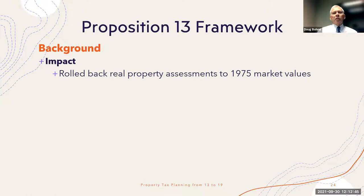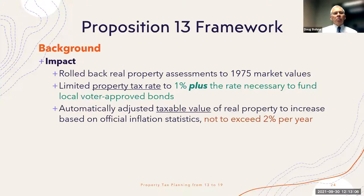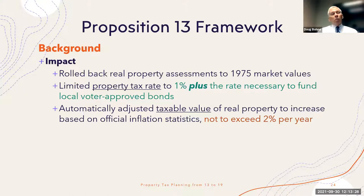Proposition 13 rolled back real property assessments to 1975 values and limited the property tax rate that assessors can charge to one percent. It is then increased at a maximum of two percent per year. In practice, it's generally been at least two percent per year, though there have been situations where a property owner was able to petition the assessor for a reduced value. The only time property is reassessed to current market value — which explains why one neighbor pays $25,000 in property taxes while another pays $2,500 — is when there is a change in ownership or new construction.